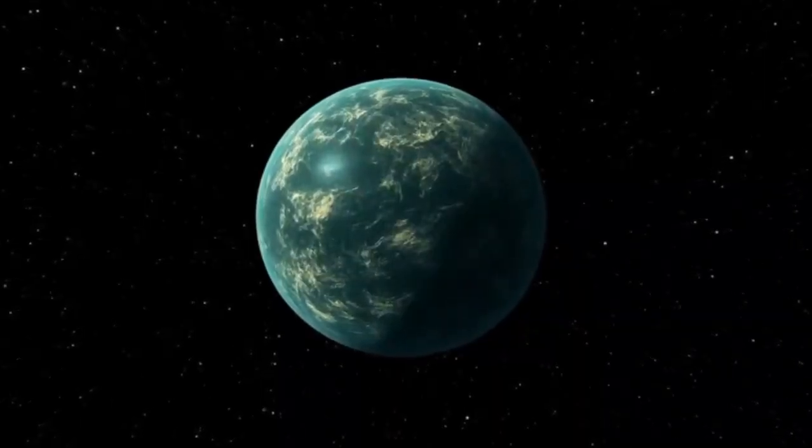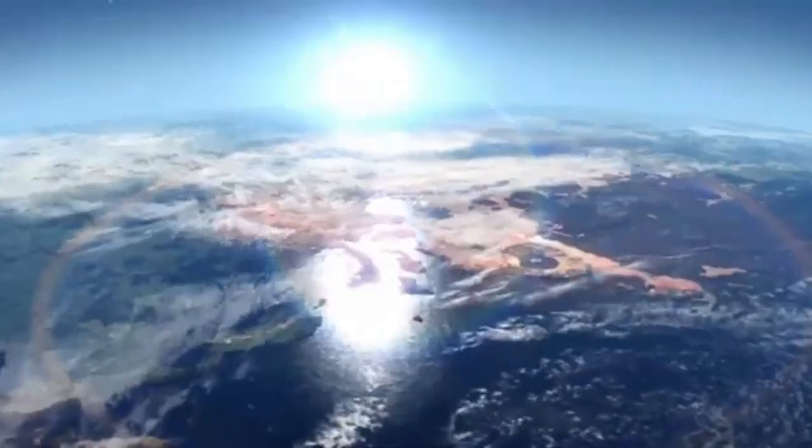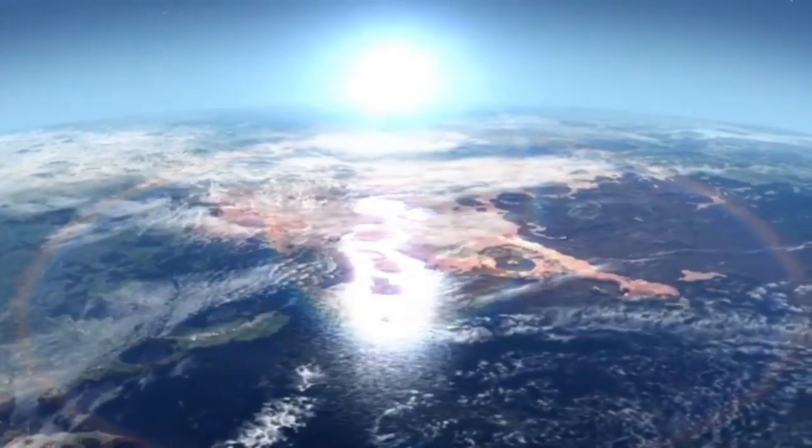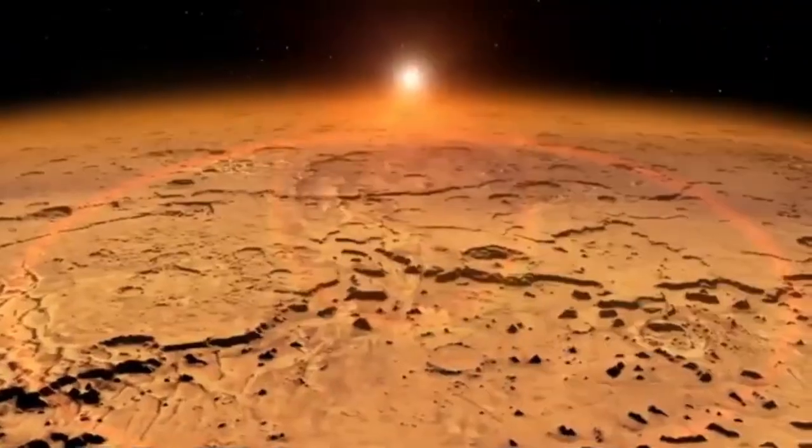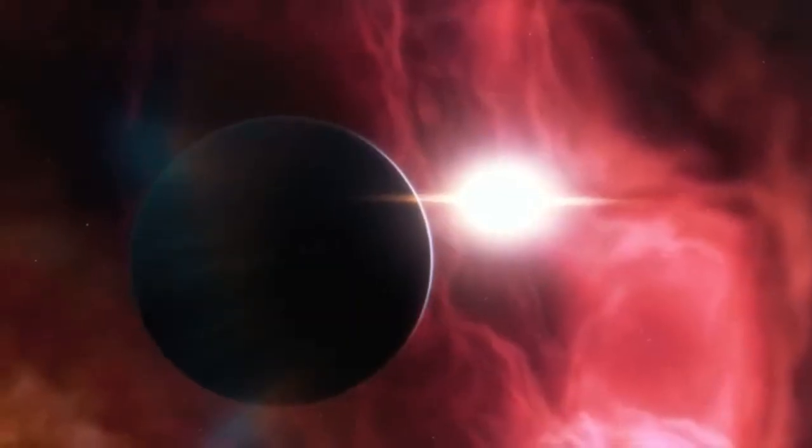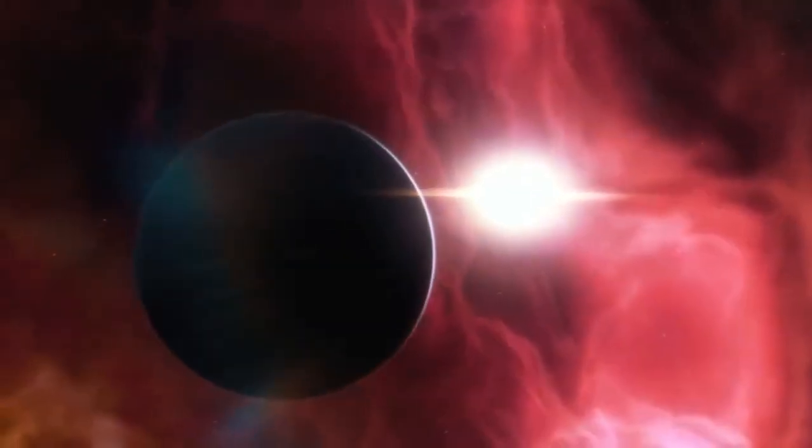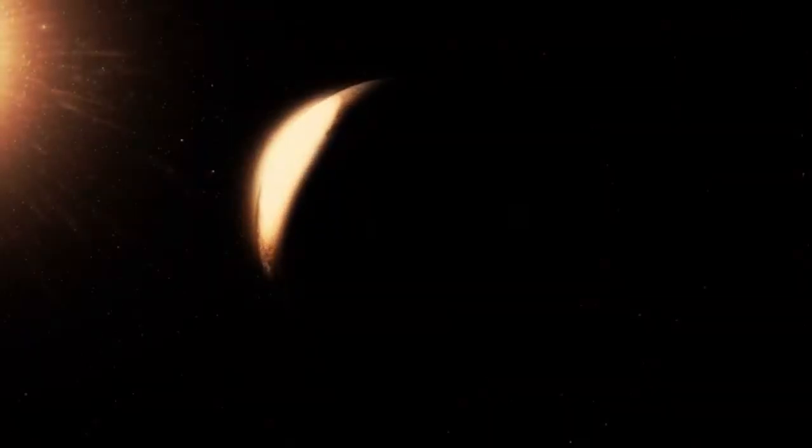This is where the work of Heller and Armstrong becomes especially important. They propose that the best planets for life might not just be like Earth, but better. In developing new models for exoplanet evaluation, they included multiple parameters: the planet's size, mass, atmospheric retention, tectonic activity, and more.